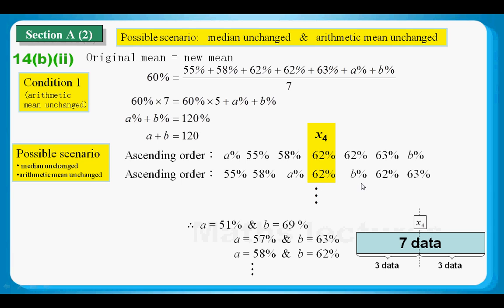However, in this case, B must be 62 as you can see. And there are other several possible scenarios which obey these two restrictions. So there is another answer like 57 and 63. This is the end of part B.